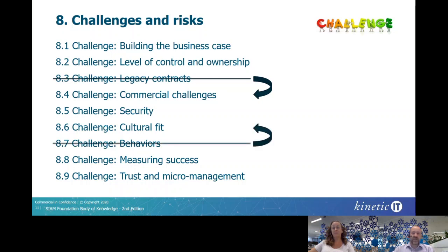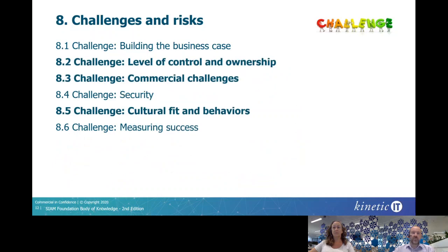Similarly, the challenge of behaviors and that of culture fit had similarities, and again, we've merged these. And finally, the challenge of trust and micromanagement overlapped with the earlier challenges around the level of control and ownership, and these two have also been combined. The outcome is that we've managed to rationalize the number of challenges from nine to six without really losing any of the theory and content previously provided. And for those interested in the details, we've highlighted the sections of the challenges that have been updated and merged.